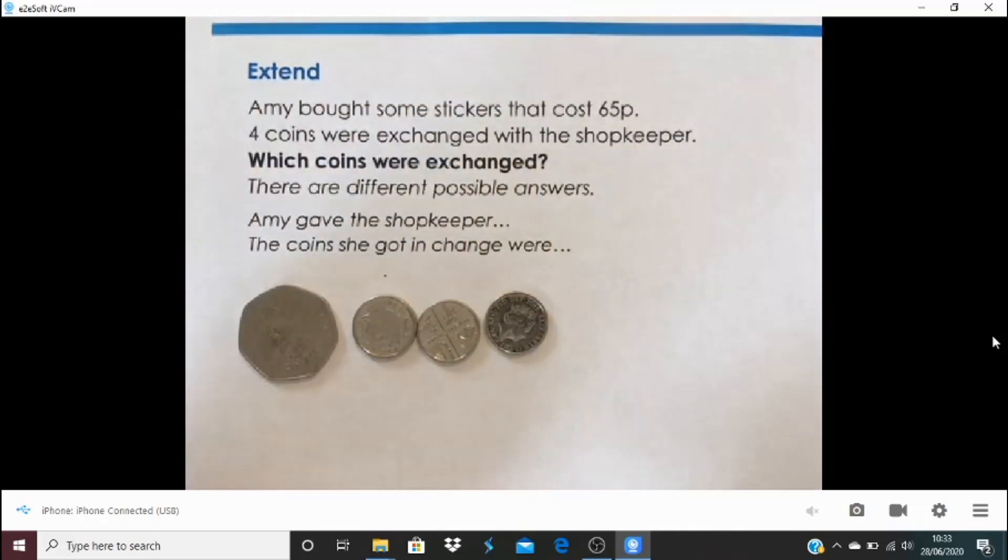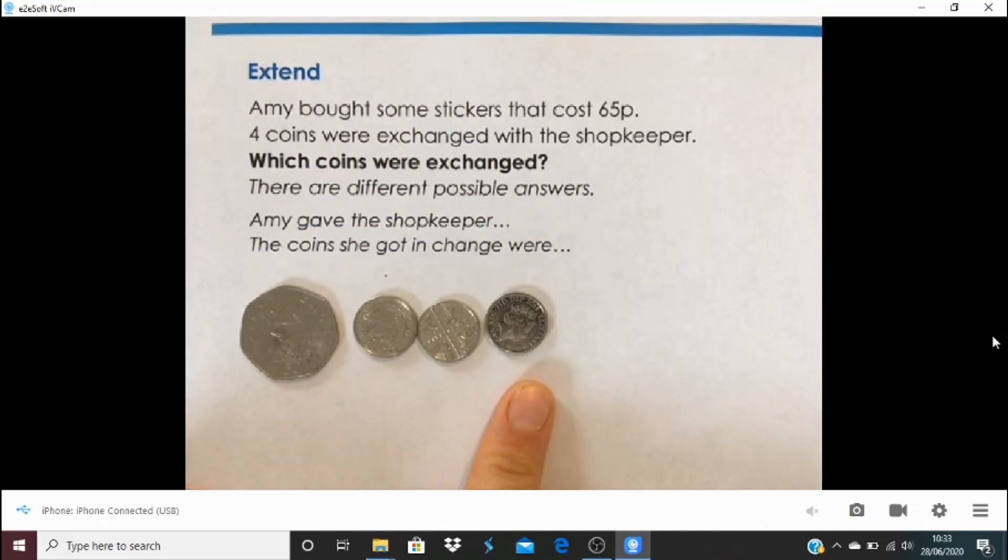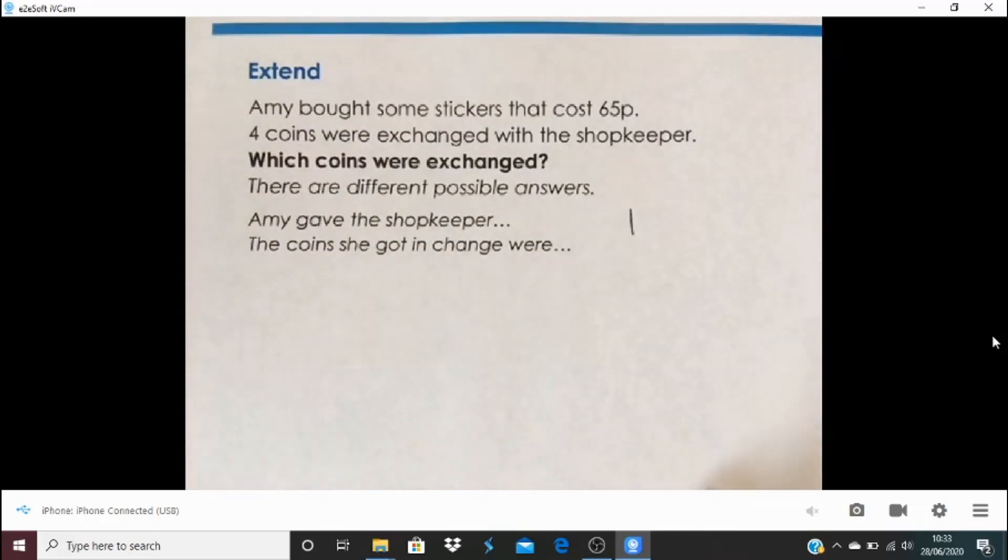Now the only way to make 15p to add to that 50p with three coins is a 5p, a 5p and a 5p. So there we found one way. I'm going to do a tally chart here. One way of making just 65p. Four coins, no change.